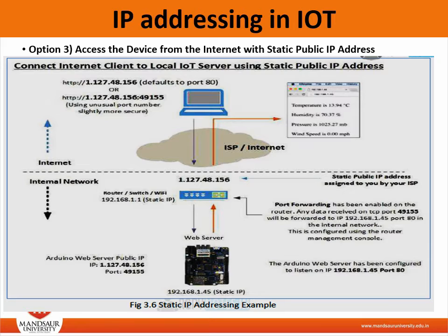However, you might be able to pay extra for this functionality, and some business accounts are available with static IP addresses. The most common reason for wanting a static IP is for hosting an email server. In this diagram we could use HTTP://1.127.48.156 or HTTP://1.127.48.156:49155 to connect to the IoT server.